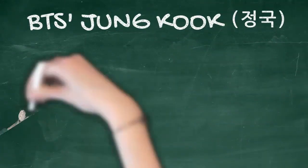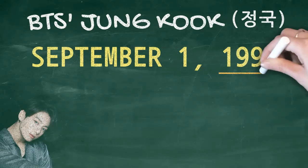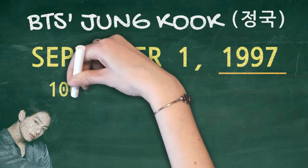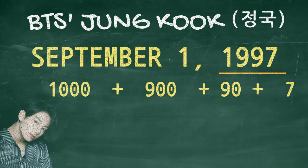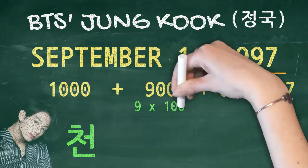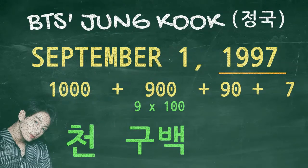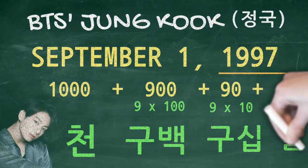Let's take BTS Jungkook's birthday as an example: September 1, 1997. We'll start with the year, 1997. Imagine that we are combining one thousand, nine hundred, ninety, and seven — that is how we'll combine the numbers. One thousand is 천 (cheon). Nine hundred is a combination of nine times one hundred, so that would be 구백 (gu-baek). And lastly, seven is 칠 (chil).